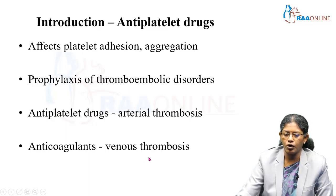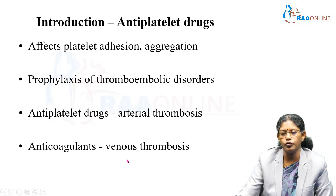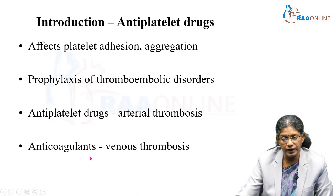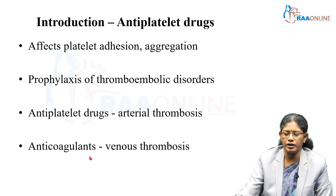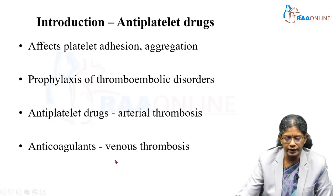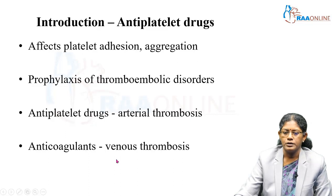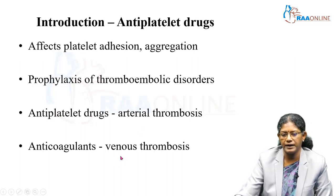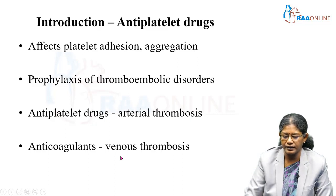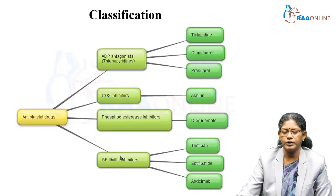If a clot forms in a vein, it is mainly due to fibrin — anticoagulants are used to prevent it, and fibrinolytic drugs to treat it. If a thrombus is in an artery, antiplatelet aggregatory drugs are used for prevention.